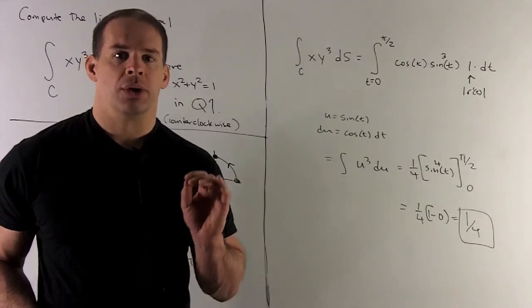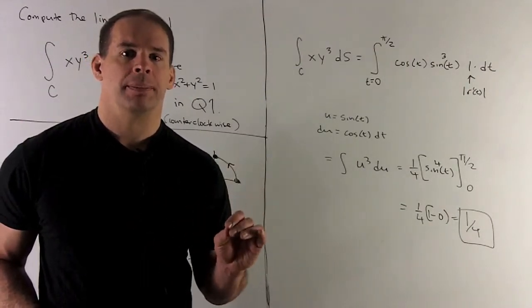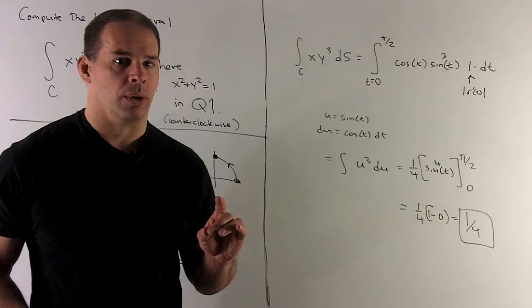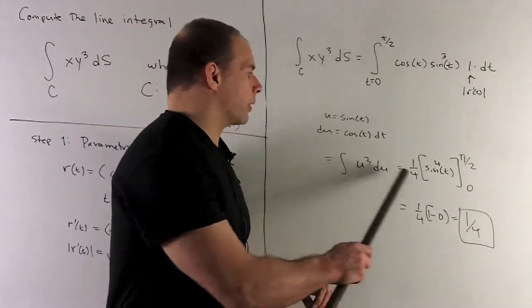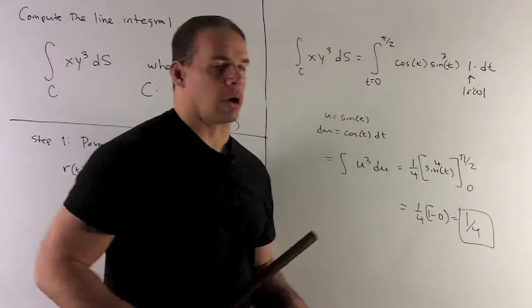du equals cosine t dt, and then we can just follow our nose. So when we work things out, we'll note we're going to get a one fourth.